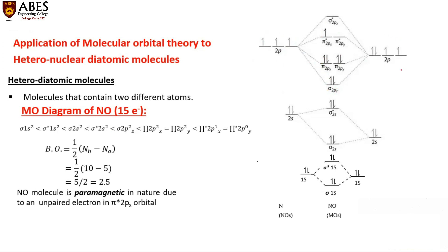One atom contributes three electrons and the other four, so after filling these six electrons, the remaining electron goes into the antibonding pi* 2px orbital. Since pi* 2px contains one unpaired electron, the molecule exists in a paramagnetic state.